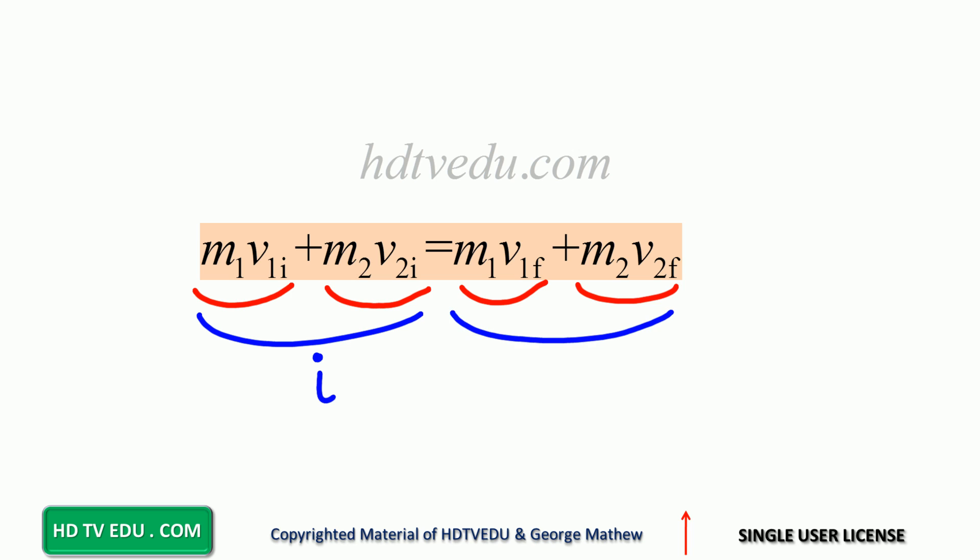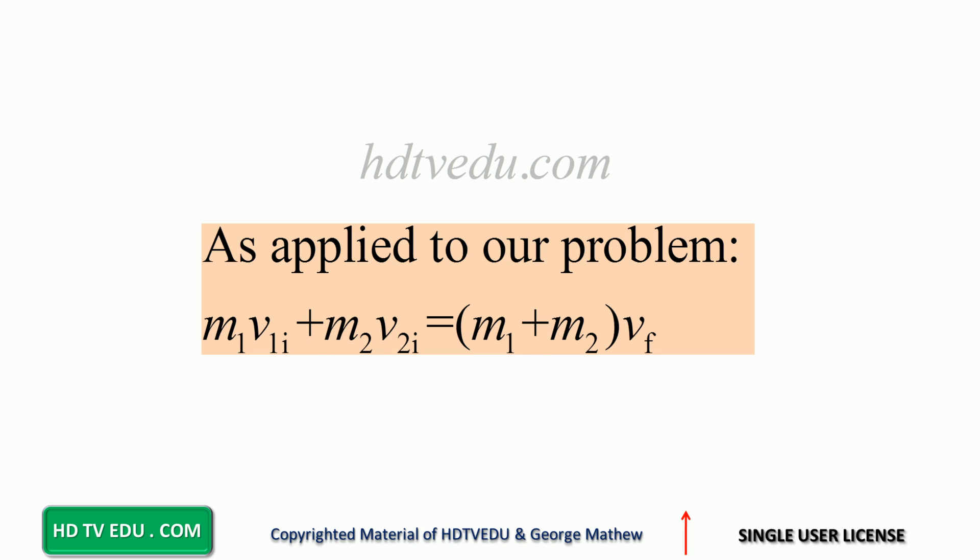Momentum of the first object before collision plus momentum of the second object before collision equals momentum of the first object after collision plus momentum of the second object after collision. When they stick together, mass m1 and m2 combine and both move at the same speed. As applied to our problem: m1·v1i + m2·v2i = (m1 + m2)·vf.